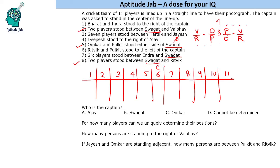Taking the minimum fourth position for Swagat, counting six more players to the right places Indra at position 11. So Swagat is at position 4, with Omkar and Pulkit on either side, and Vaibhav and Rithvik at the two positions two spots away.